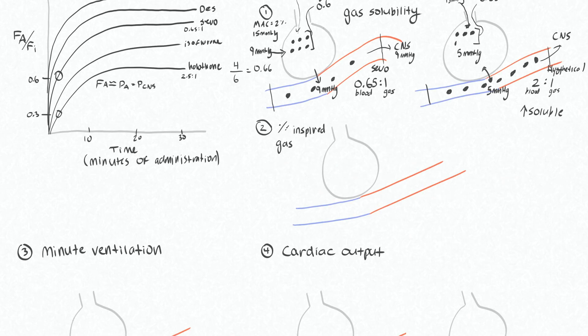So number two, the percentage of inspired gas. Let's say that instead of breathing in 10 particles, now we'll breathe in 20. So we double our inspired gas to 20. Maybe instead of an Fi of 2% for a MAC of 1, we're giving an Fi of 4%, doubling the amount of gas we're delivering to the alveoli.